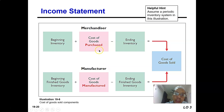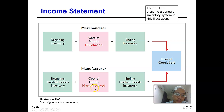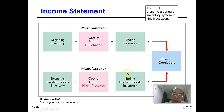For a manufacturer, because they do not purchase goods but instead manufacture the goods, they have the beginning finished goods inventory — the finished goods which they have not sold. Then they add the cost of goods manufactured, which we understand from the previous video as the cost of manufacturing. They then minus all the finished goods inventory that were not sold, giving the cost of goods sold. So: beginning finished goods inventory, plus cost of goods manufactured, minus remaining finished goods inventory equals cost of goods sold, which is deducted from revenue to obtain gross profit.